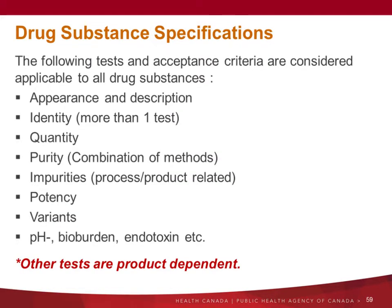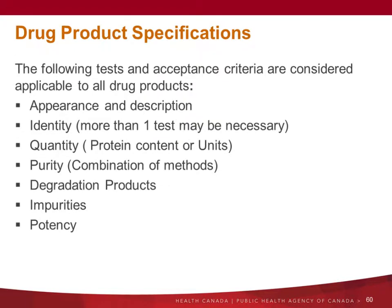Here is a quick list of tests applicable to all drug substance: appearance and description, identity testing — there should be more than one test — purity, impurity, potency, process-related variants, product-related variants, pH, bioburden, endotoxin, and other product-dependent tests. The list for drug product is really similar — you can find that list in Q6B.